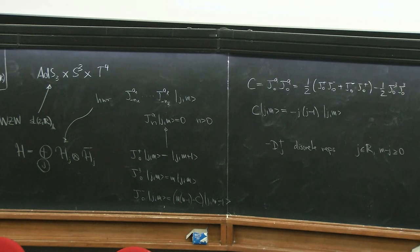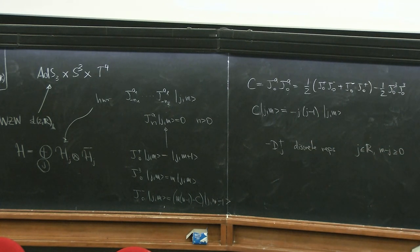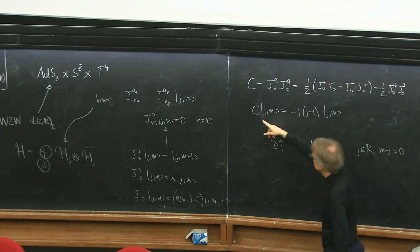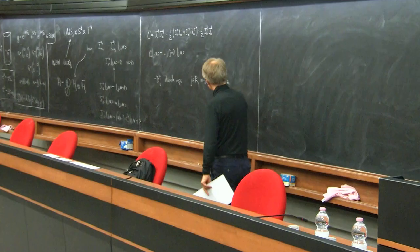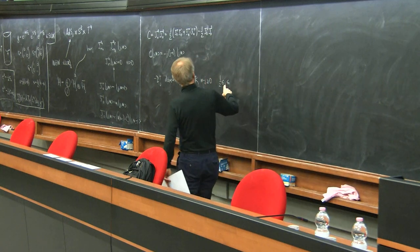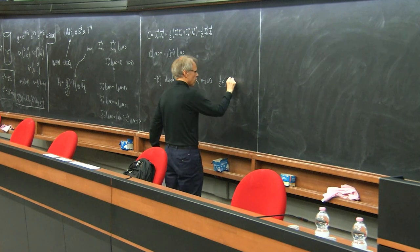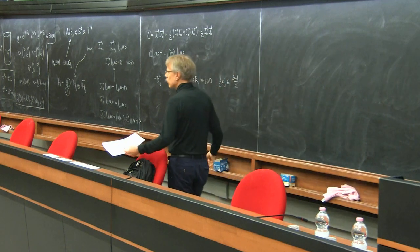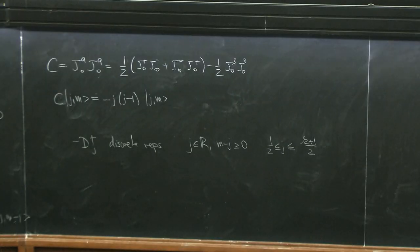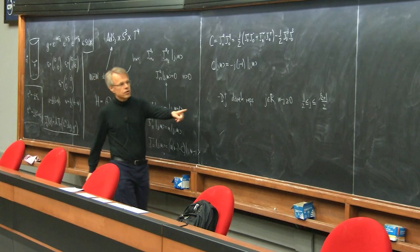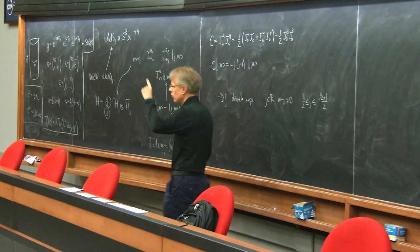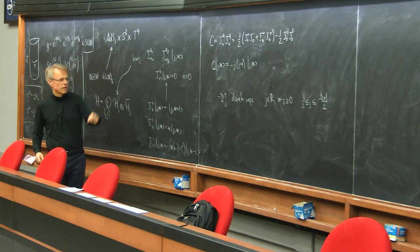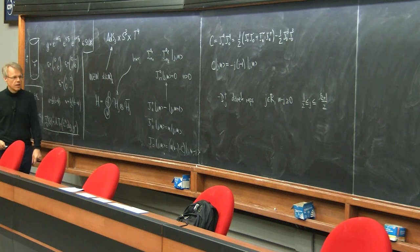Once you impose the physical state condition and end up with a positive-definite space of states, you have to restrict J so that it's bigger than one-half and less than (K+1)/2. In the K goes to infinity limit you don't care, and this is the analog of what you know for SU2, where the spin runs from one-half to K/2. This is now an integral because J is real — J is not quantized because SL2R is non-compact — so you integrate over all J in this range.